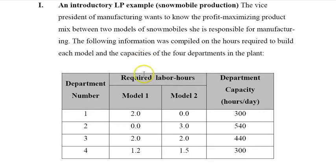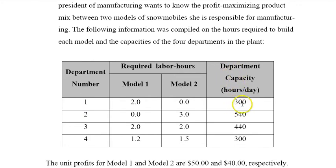Here we have the information. We have model one and model two - these are the labor requirements. We have four departments that are needed to produce these models and these are the capacities available. In the first department we have 300 hours per day available, in the second department 540 hours per day, 440 in the third department, and 300 in the fourth department.